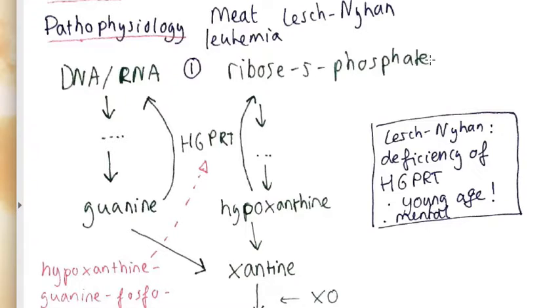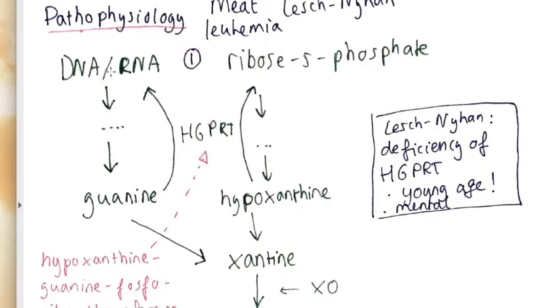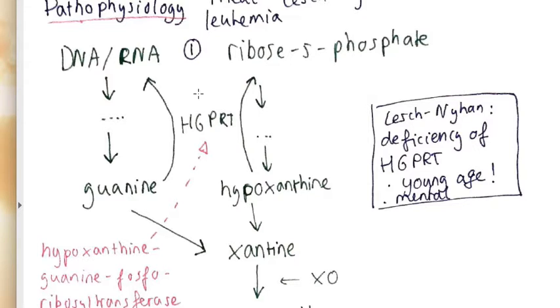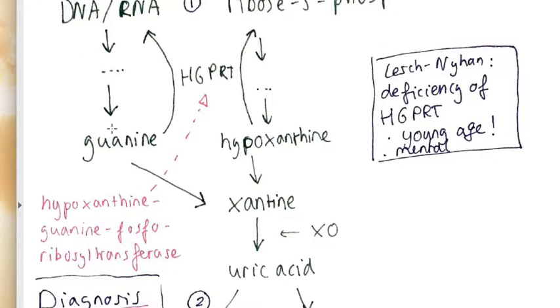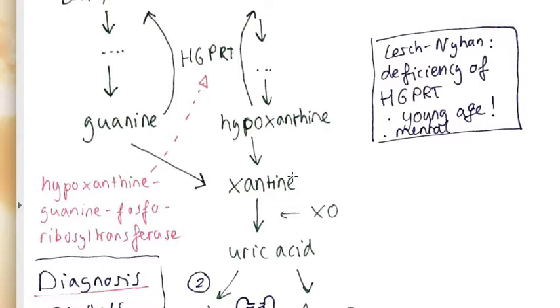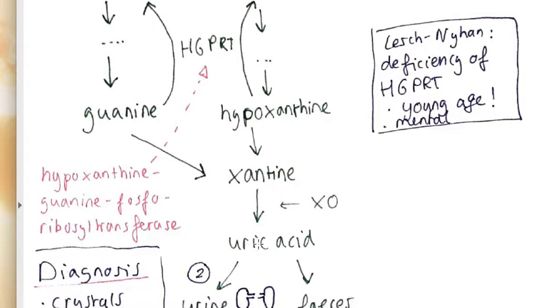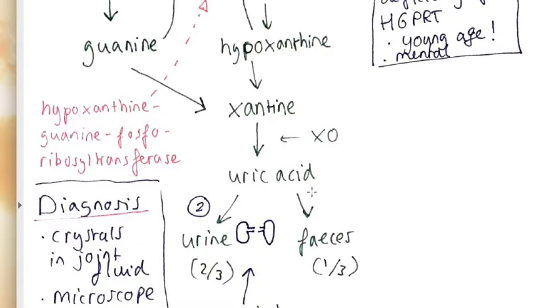And also the ribose-5-phosphate is a breakdown product of glucose, so it's a sugar group. What happens if we have DNA or a sugar group: it gets broken down to guanine or hypoxanthine, then xanthine, and when it's broken down to xanthine you get uric acid. So uric acid is what these crystals are made of.